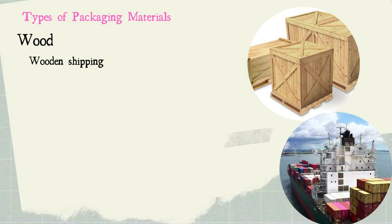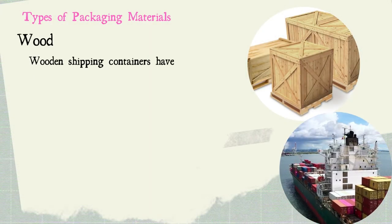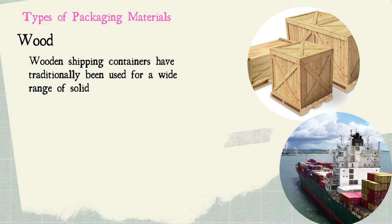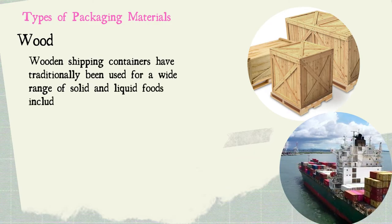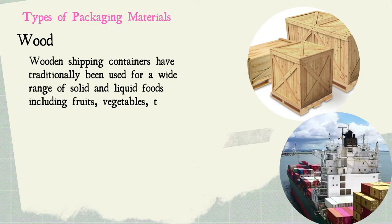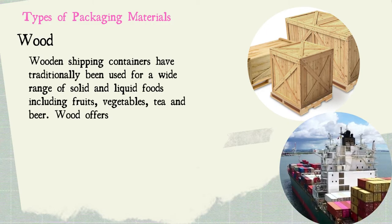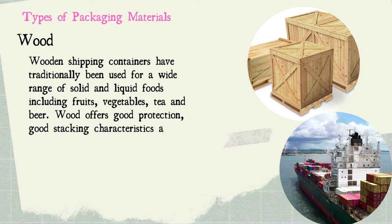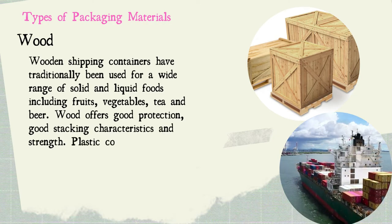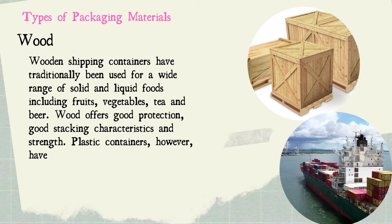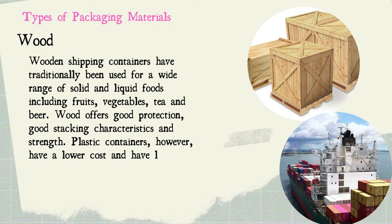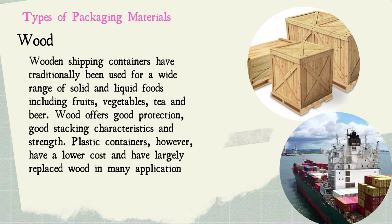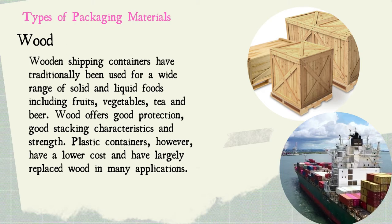Another packaging material is wood. Wooden shipping materials or containers have traditionally been used for a wide range of solid and liquid foods, including fruits, vegetables, tea, and beer. Wood offers good protection, good stacking characteristics, and strength. Plastic containers, however, have a lower cost and have largely replaced wood in many applications. The use of wood continues for some wines and spirits because the transfer of flavor compounds from the wooden barrels improves the quality of the product.